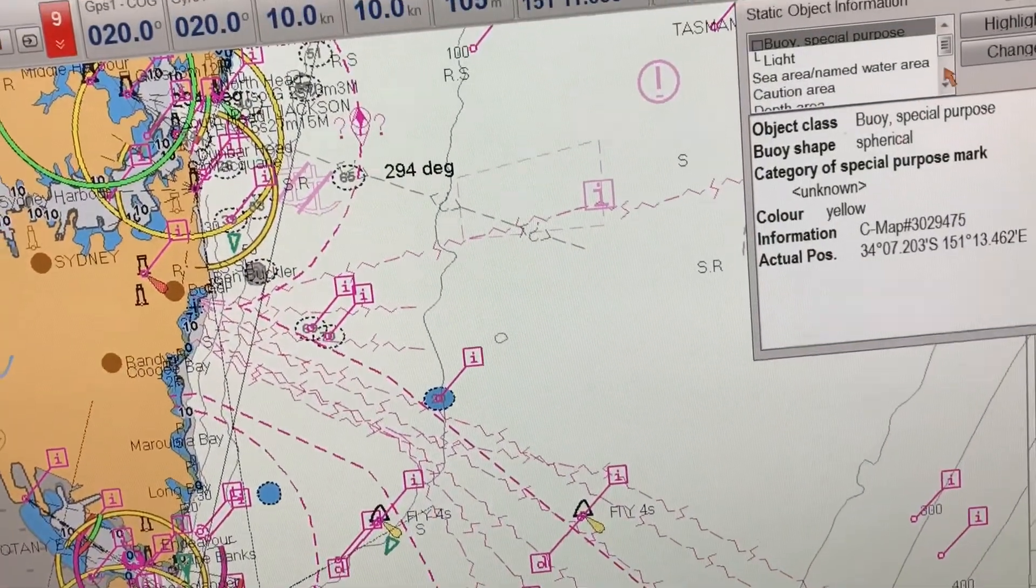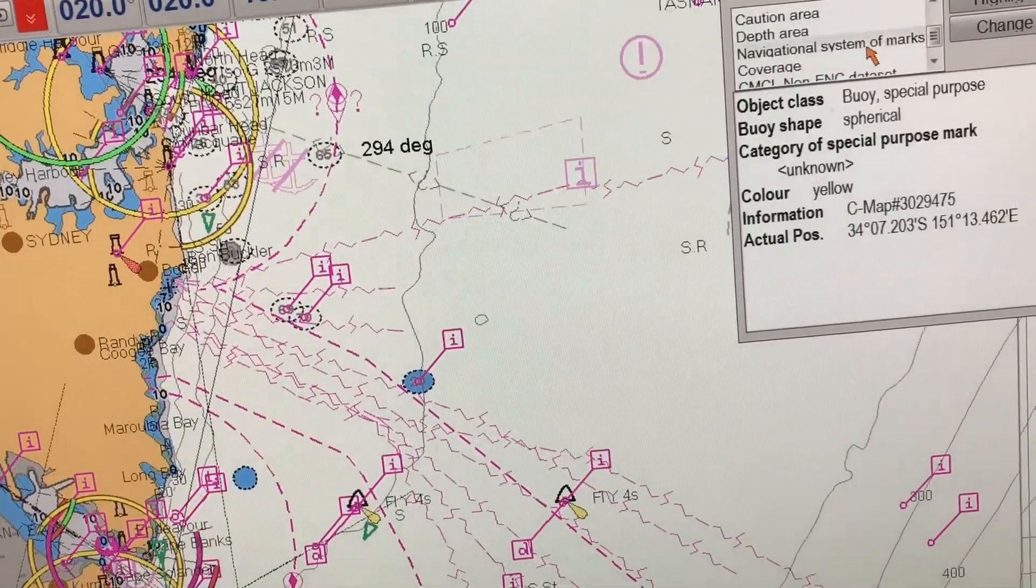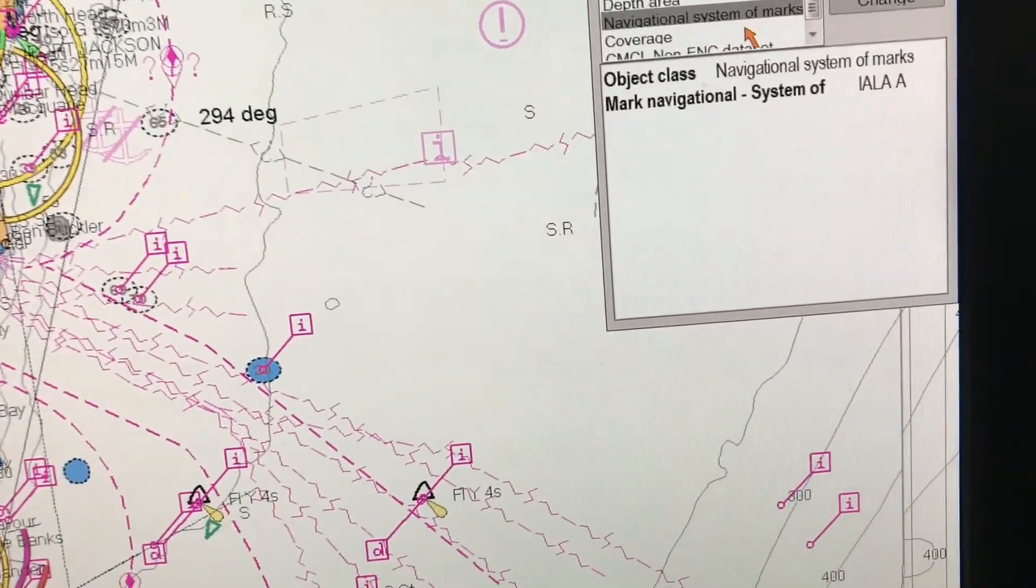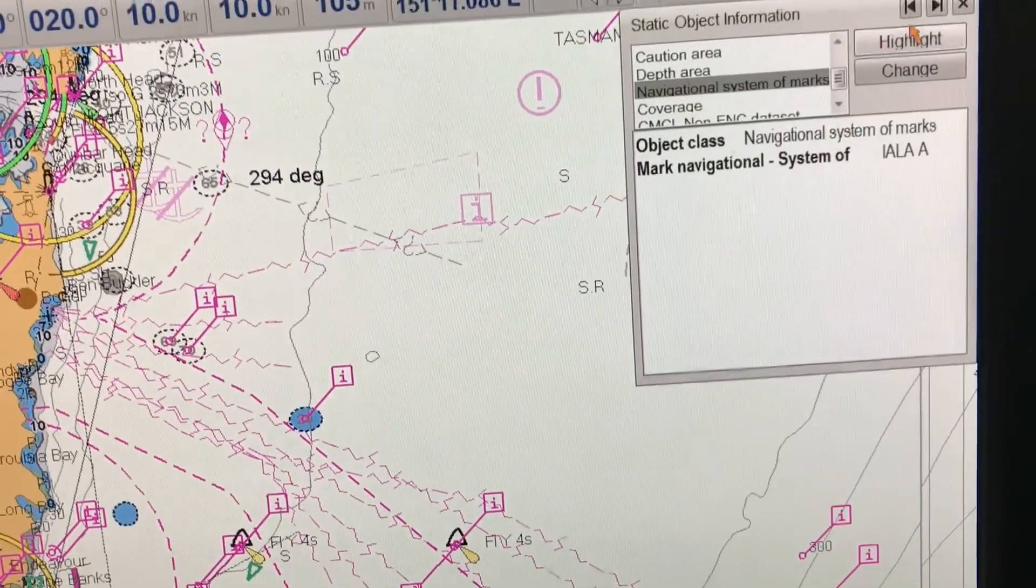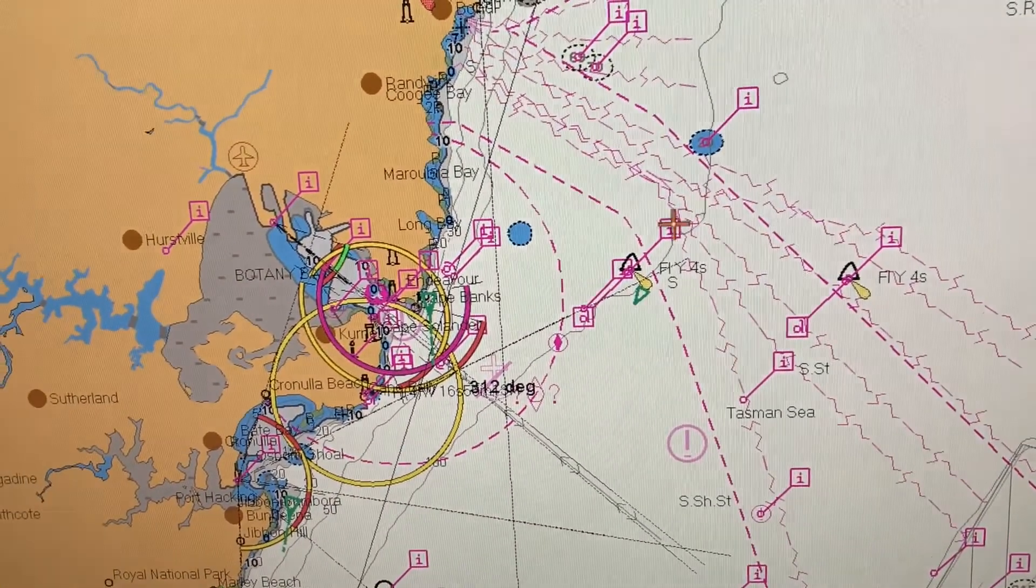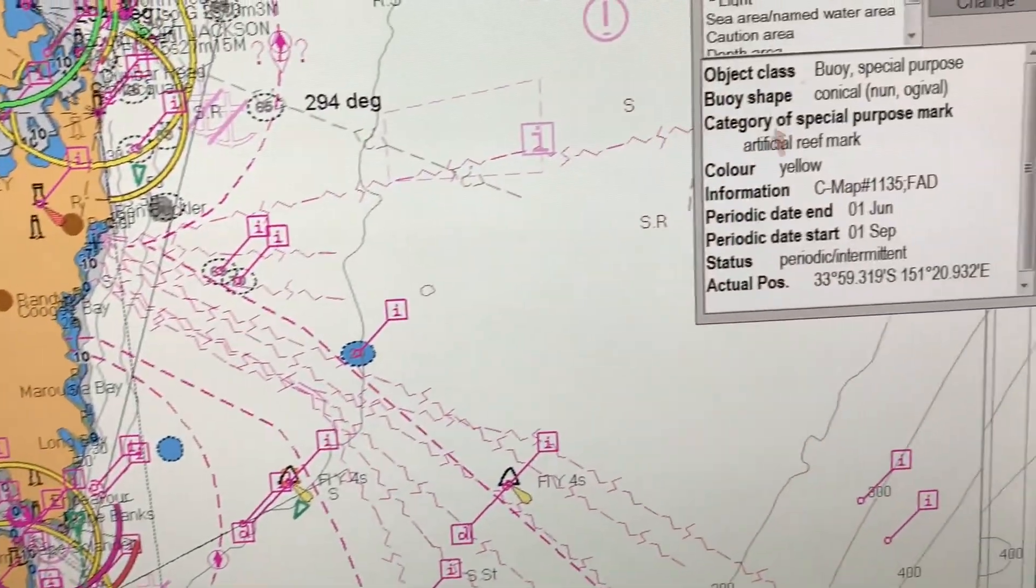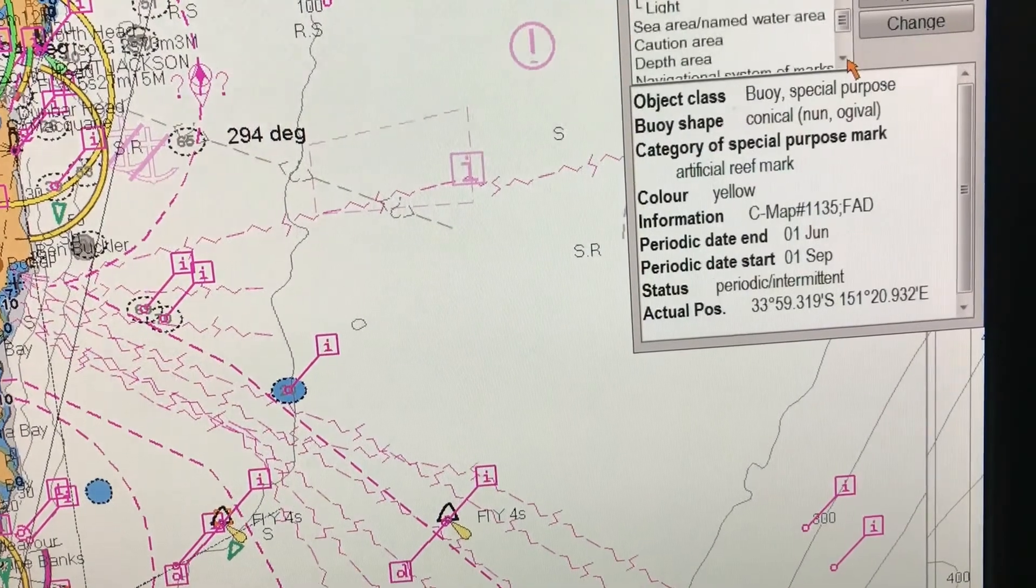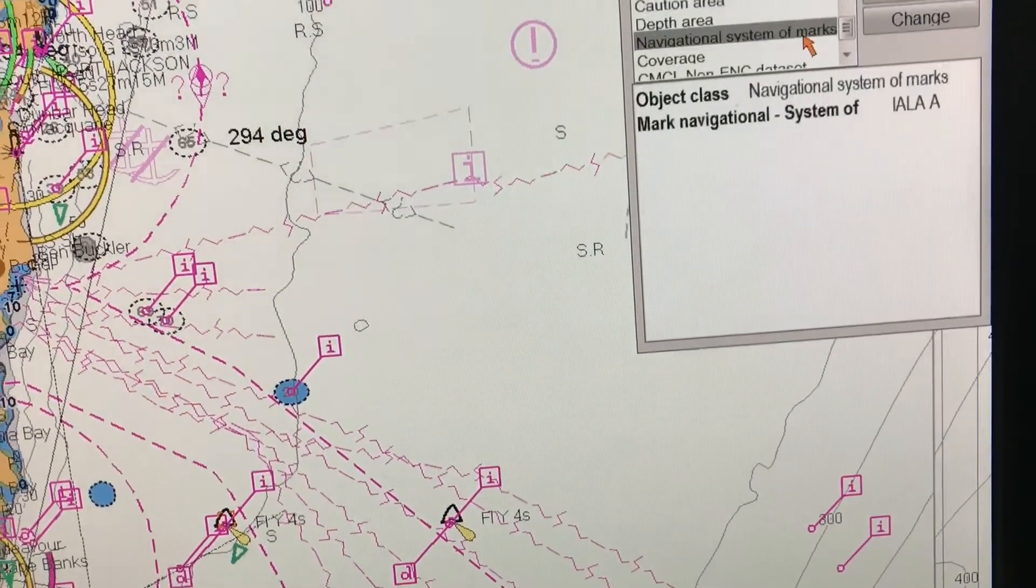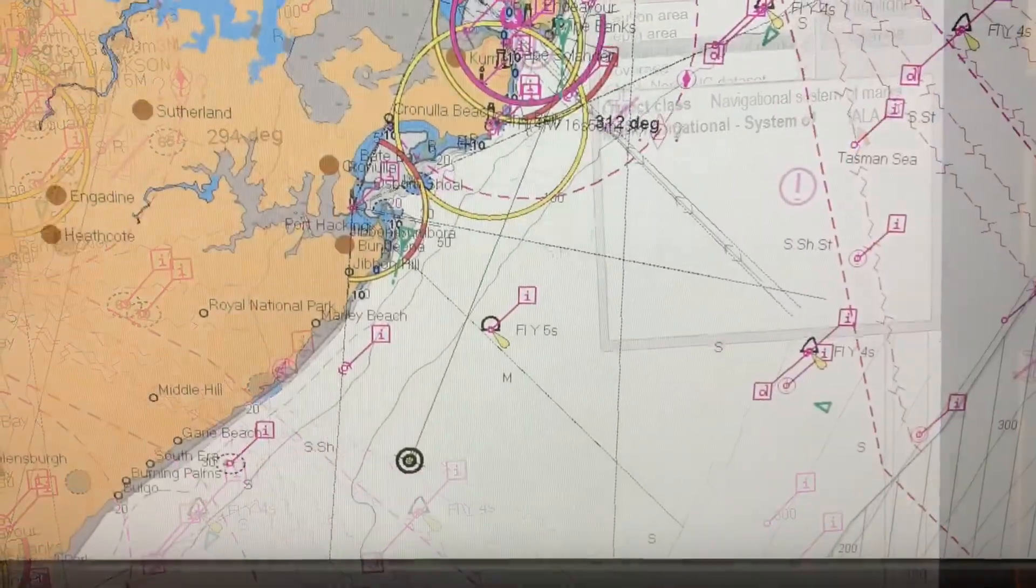In a box here and you can go into any of the sections here and find out the details of the buoy. For example, I go into navigation system of marks and I can see that this buoy is of category IALA A. So again you can click on any buoy of any choice. The characteristics are given here, for example, yellow periodic intermittent flashing, the position of the buoy as well as the classification of the buoy.